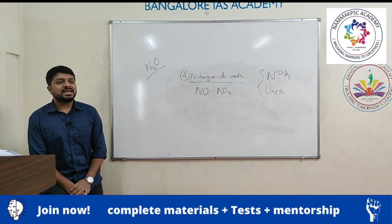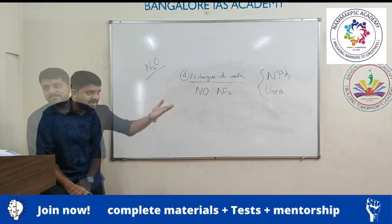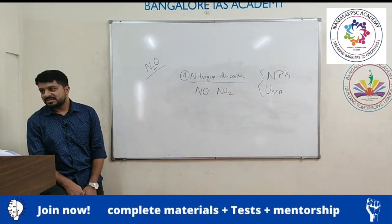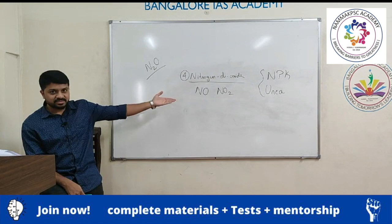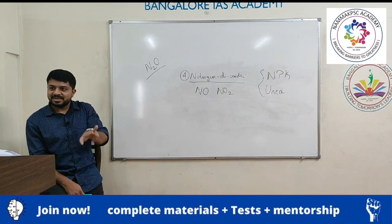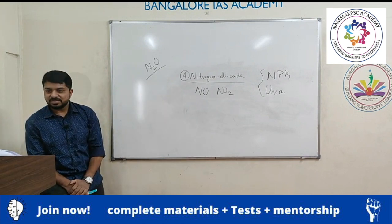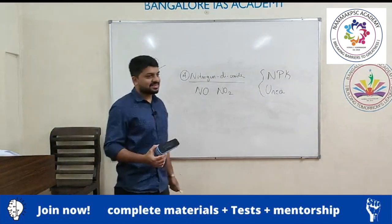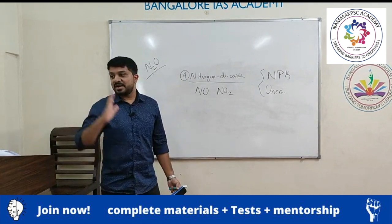Why are nitrogen monoxide and nitrogen dioxide global coolants? Because they react with methane and destroy it. Methane is a greenhouse gas that causes global warming, so by destroying methane, nitrogen monoxide and nitrogen dioxide effectively cause global cooling. This class is more of a chemistry lesson than an environment class, but we're looking at the effects of chemistry on the environment and health.